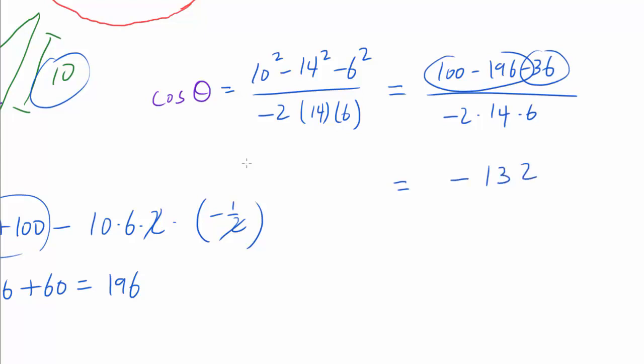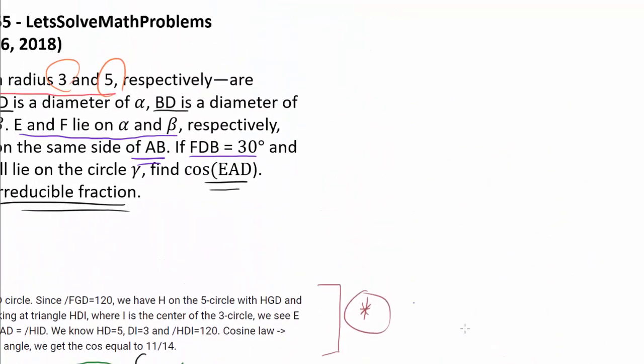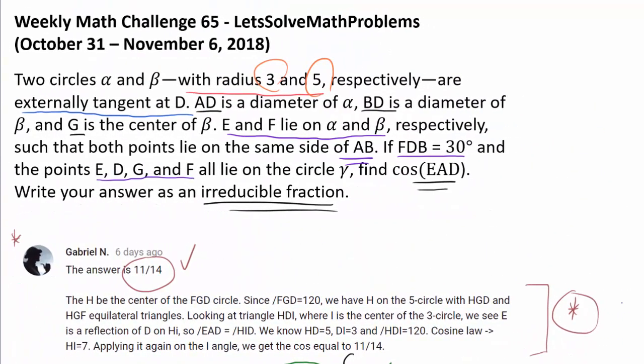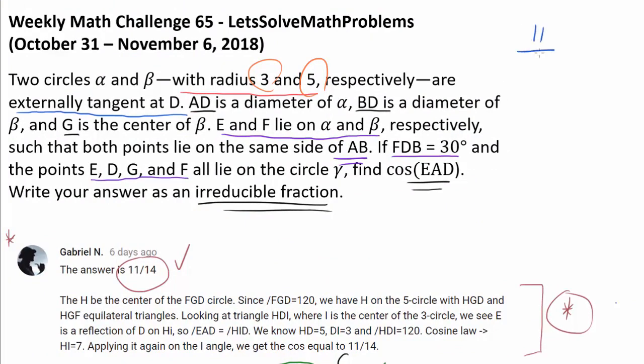That's minus 96, take away another 36, that's minus 132. And we see that 6 goes nicely into 132, getting us 22. 2 and 22 gets us 11. And the negative signs are going to cancel out, leaving 11 over 14 at the end. And we are done. So the final answer to this geometry problem, weekly math challenge number 65, is 11 over 14.